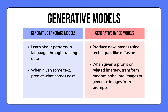Let's see the difference between language models and image models. Generative language models learn about patterns in language through training data, and then, given some text, they predict what comes next. Generative image models produce new images using techniques like diffusion — given a prompt or related imagery, they transform random noise into images, or generate images from prompts.